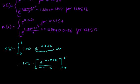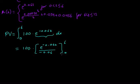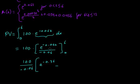What's the next step? We just have to sub in the values, but we can take out this part because it doesn't need to be there. So we can say 100 divided by negative 0.06, and now we sub in the 6 and the 0. That's going to be e to the negative 0.36 when we do 0.06 times 6, minus e to the power of 0, which is just minus 1.